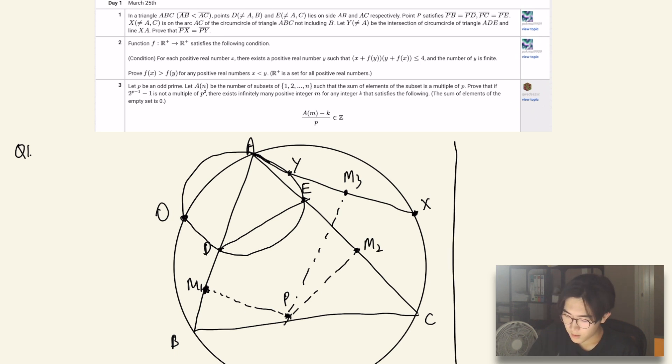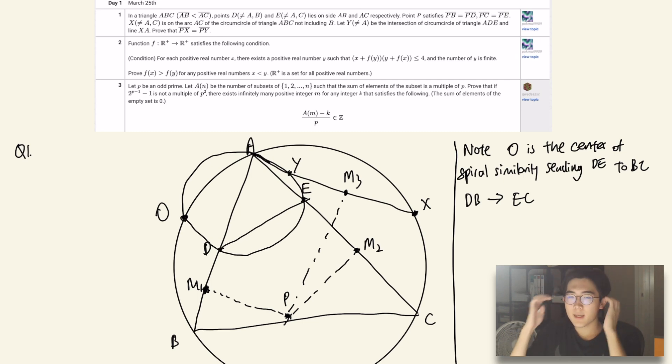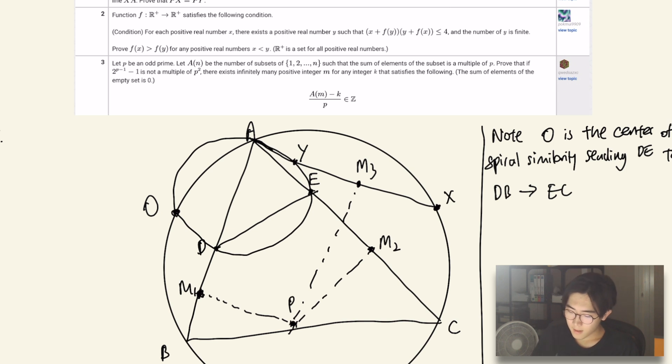So to write it out, note O is the center of spiral similarity sending DE to BC. Or you can also see it as sending DB to EC. Then at the same time, you notice that if it sends DB to EC, it means that the triangle OBD is similar to the triangle OEC.